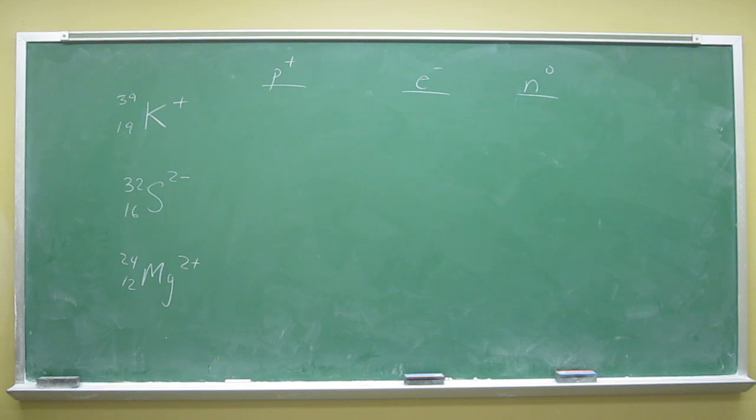So if you remember this sort of symbolism where you've got the atomic number here, the mass number here, the elemental symbol here, and the charge of the particle here. And remember, only ions have charges that are shown.